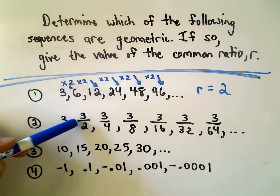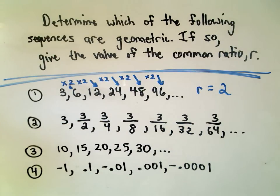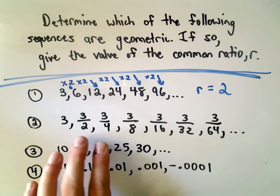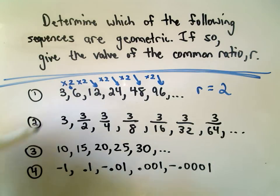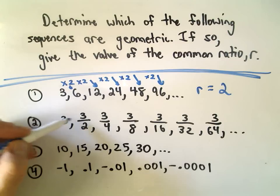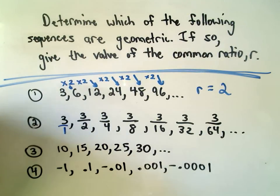How about 3, 3 halves, 3 fourths, 3 eighths, 3 sixteenths, 3 thirty-seconds, 3 over 64? Typically what I do, if I'm trying to spot if something's geometric or not, I simply find two numbers where it's easy to go from one number to the next and I just check that pattern from there. To go from 3 to 3 halves, you can think about 3 as being 3 over 1.